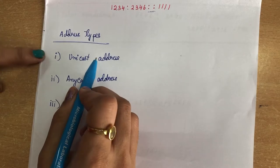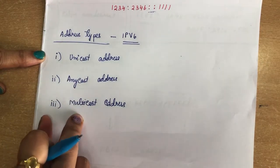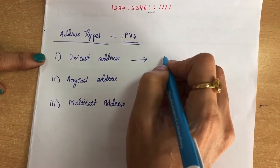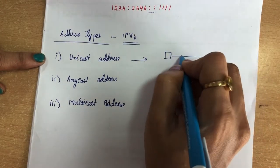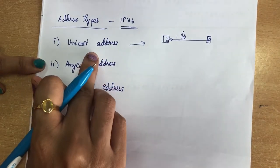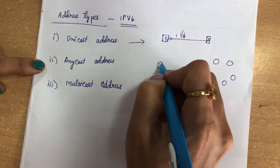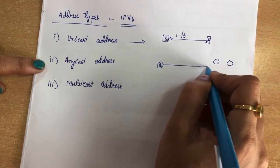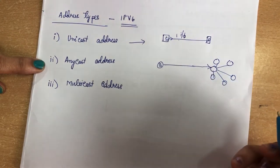IPv6 supports three addressing types: unicast address, anycast address, and multicast address. In unicast addressing, a packet is sent to one intended receiver through a single interface — from one source to one destination. In anycast addressing, you have a group of computers and a sender; the packet is delivered to any one member of the group.